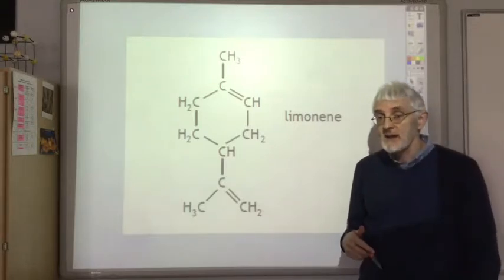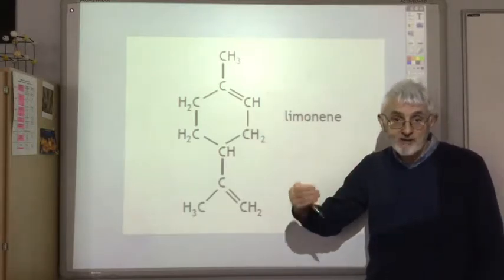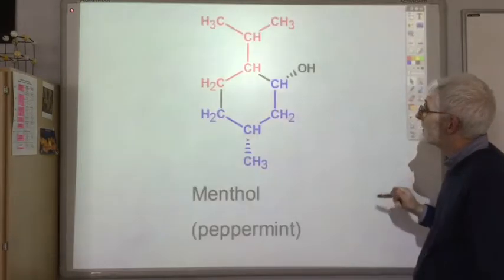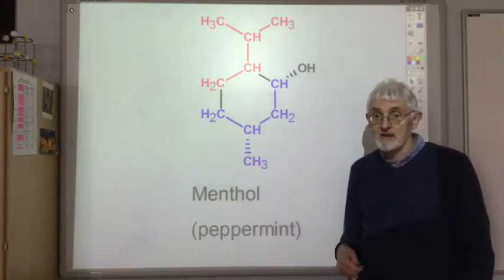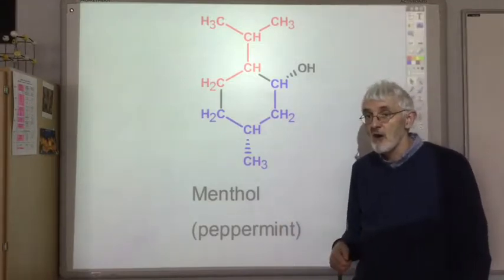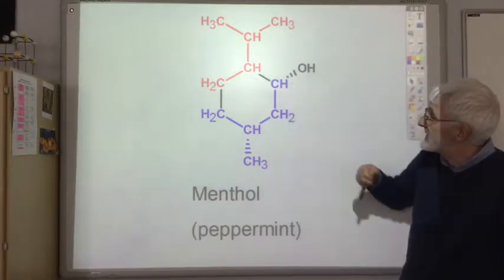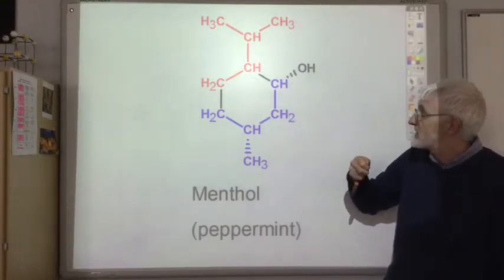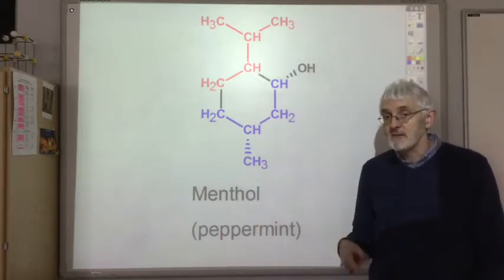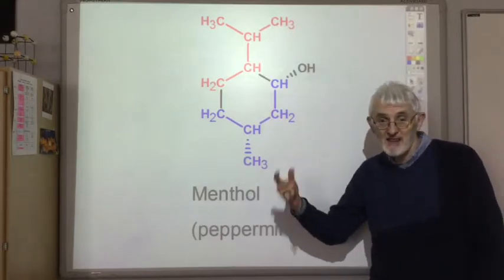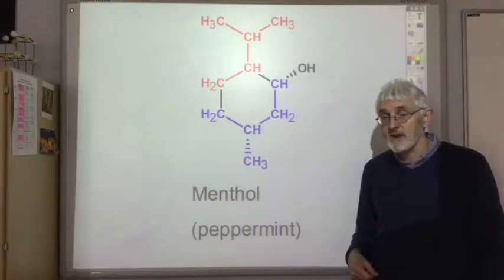Sometimes what happens in nature is that this terpene is then further oxidized. For example, this is menthol, which can be extracted by steam distillation of peppermint. See, this has now lost its unsaturation because it's been oxidized and it's got an OH group. So the oxidation of terpenes can produce alcohols, aldehydes, and ketones, which can add to the fragrance.